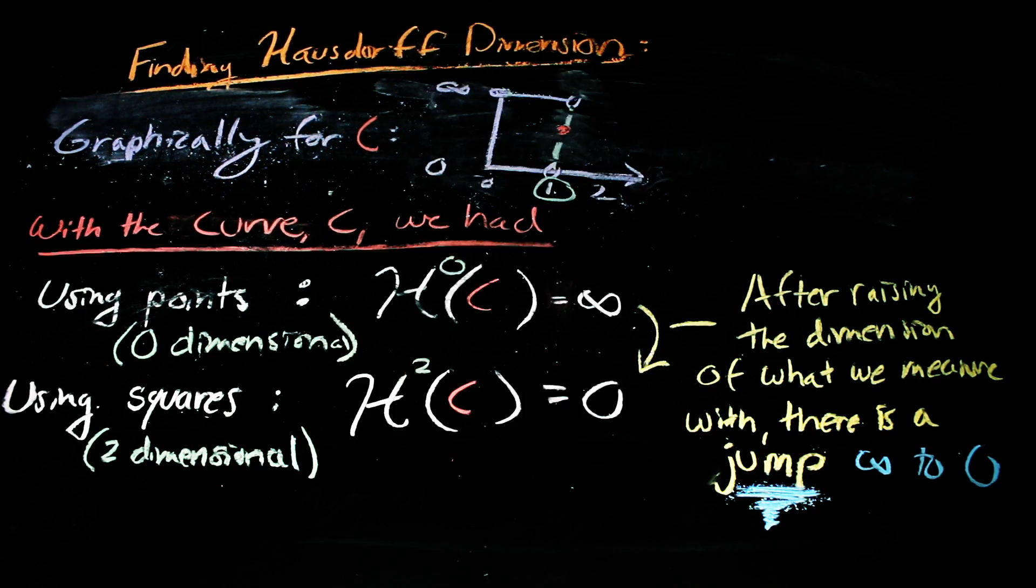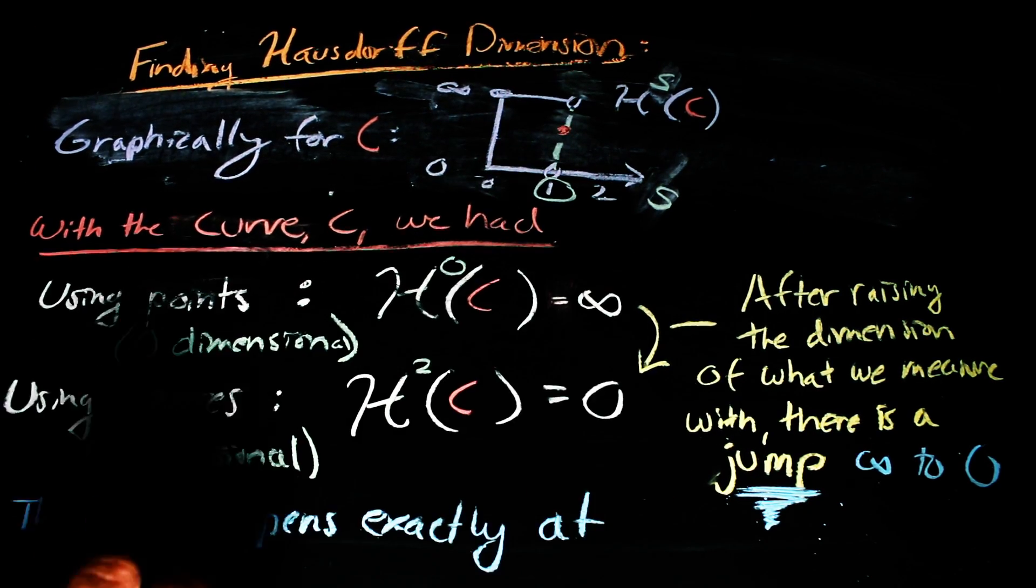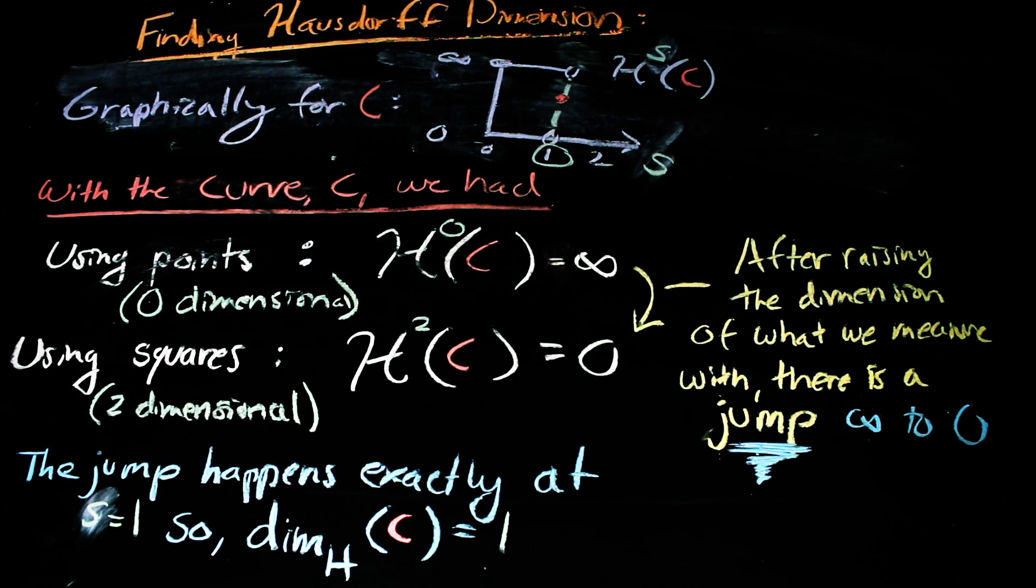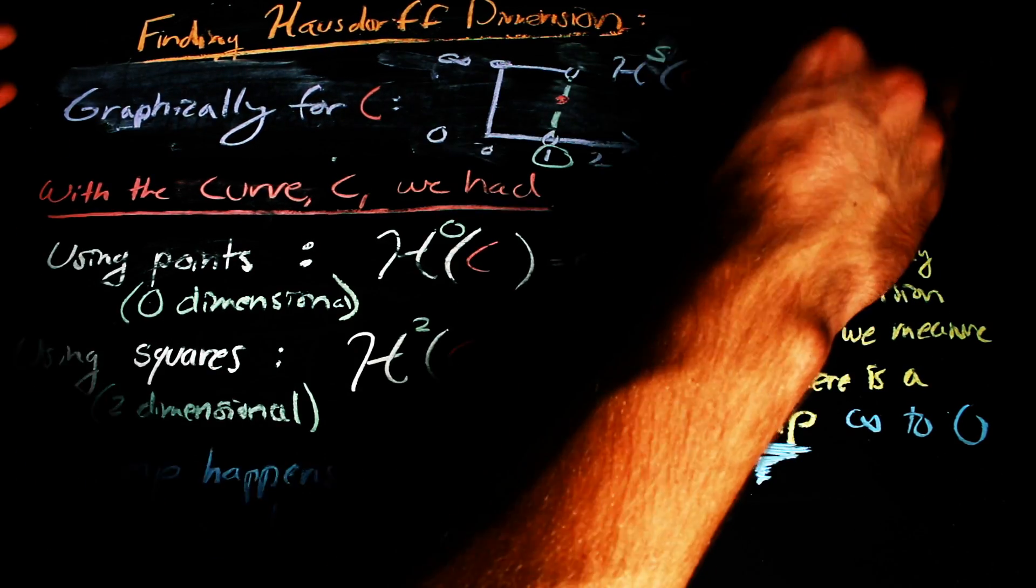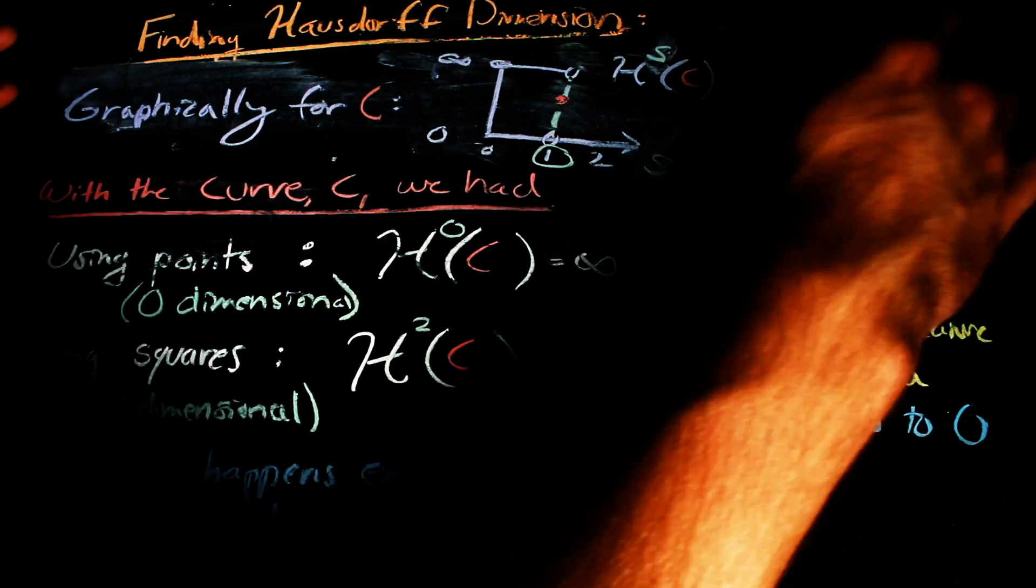This tells us that lines are the jump point, and therefore the curve is one-dimensional. When we use lines, we get something akin to length, which is non-zero and not infinity either.